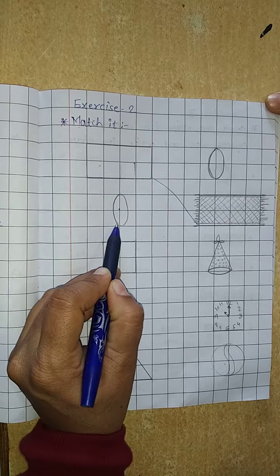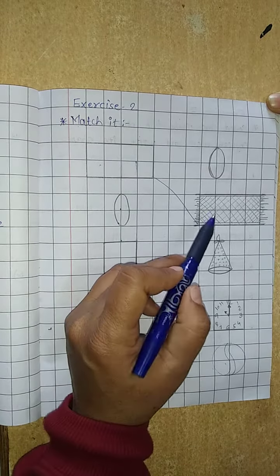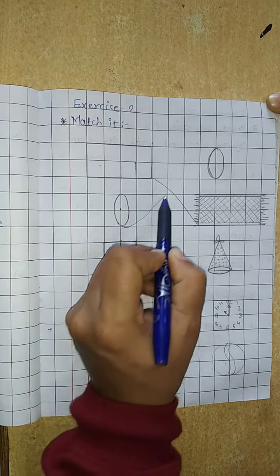Now next, here is which shape? Oval shape. Now in this line which is oval shape? Here is egg. So we have to match oval with egg.